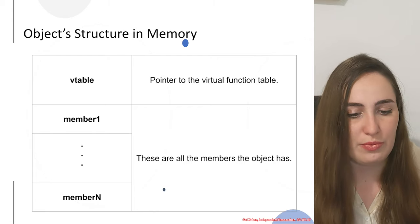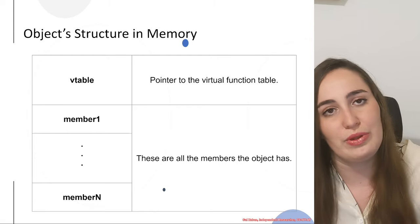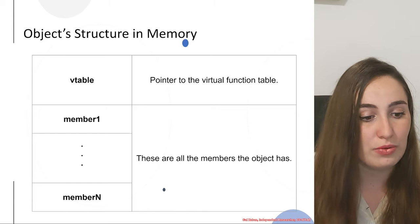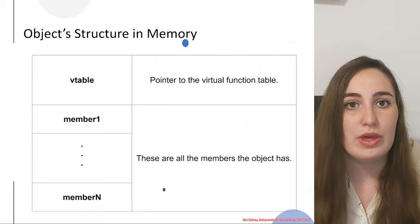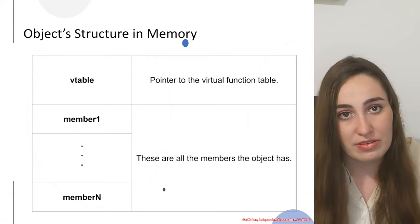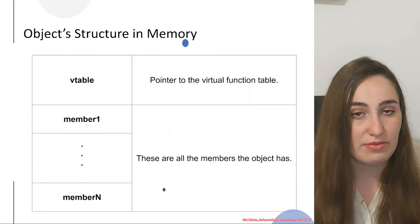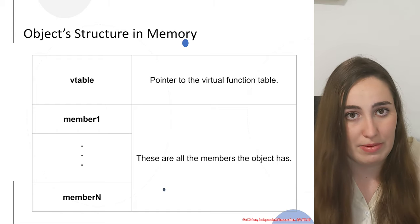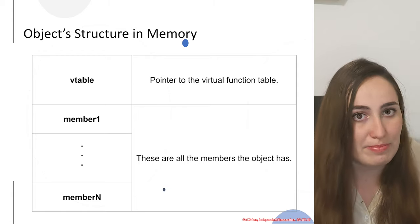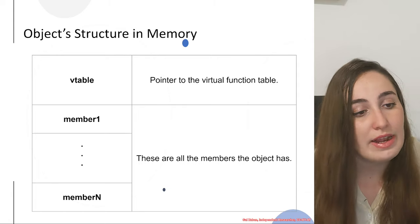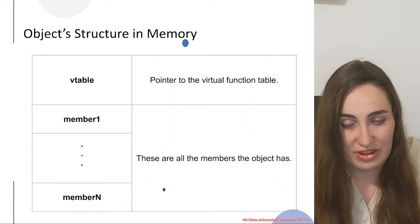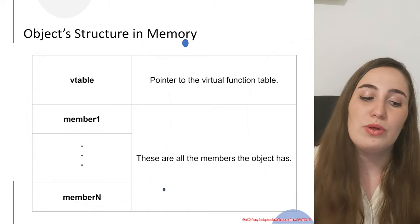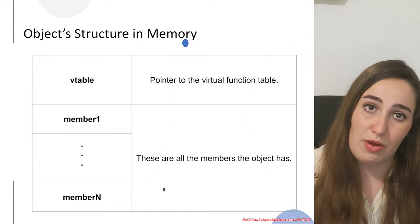First, we need to do a short overview of what we learned previously. In the previous part of the training, we talked about the object structure and memory and different types of objects. One of them is an object that has virtual functions, inherited or defined. This object would have both a V-table in the first four or eight bytes of the object structure in memory, and afterwards we would see all the members of the object. In the other object we talked about, we don't have virtual tables, and in this case we would only see the members of the object in memory.